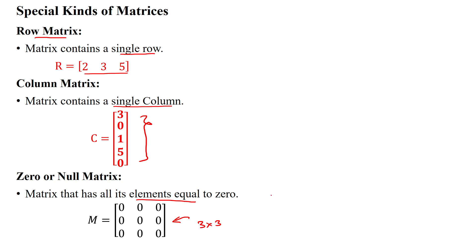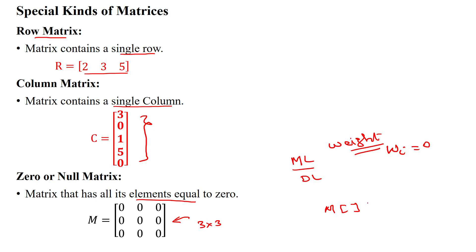Sometimes when initializing vectors for machine learning and deep learning algorithms, such as weight parameters, you may initialize all the w_i values to zero. At that time you can use this kind of null matrix or zero matrix. You may also initialize a matrix variable — a two-dimensional matrix assigned with zeros — where all elements have value zero. That's where we use this kind of matrix.